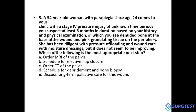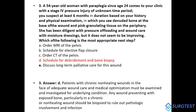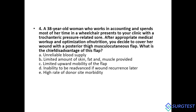Question 3: A 54-year-old woman with paraplegia since age 24 presents with a stage 4 pressure injury with visible bone in the wound and pink granulating tissue at the periphery. She has been diligent with pressure offloading and moist dressings but the wound is not improving. The most appropriate next step is to schedule for debridement and bone biopsy, since a chronic non-healing wound with exposed bone must first be investigated for underlying infection before proceeding to surgical reconstruction.